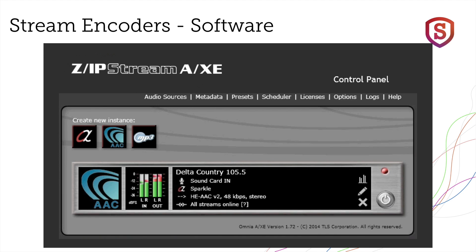What about input options? LiveWire, or in fact any valid Windows input, works — including the motherboard-based audio input that almost every PC has, and a wide range of USB-connected audio devices. In other words, if Windows can see it, so can the Zipstream AXE.